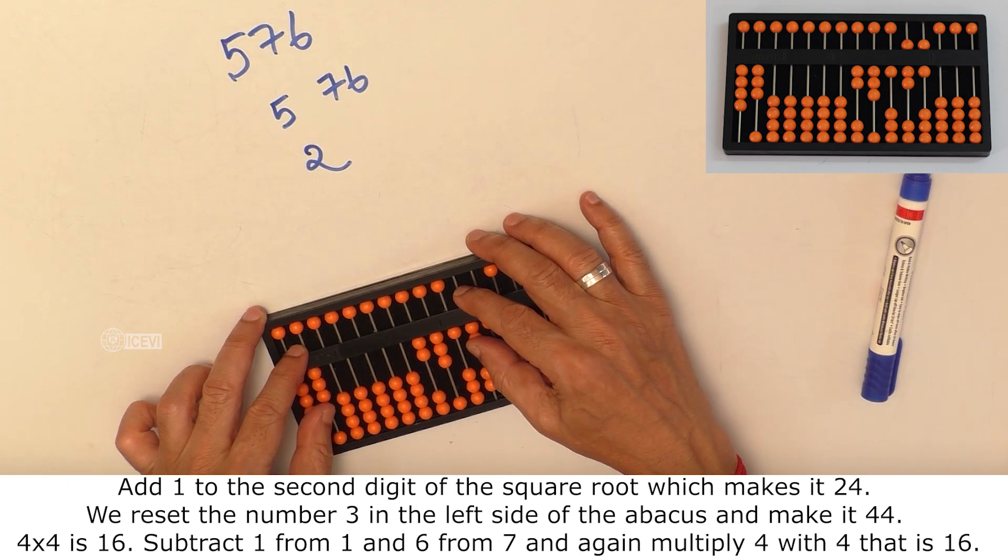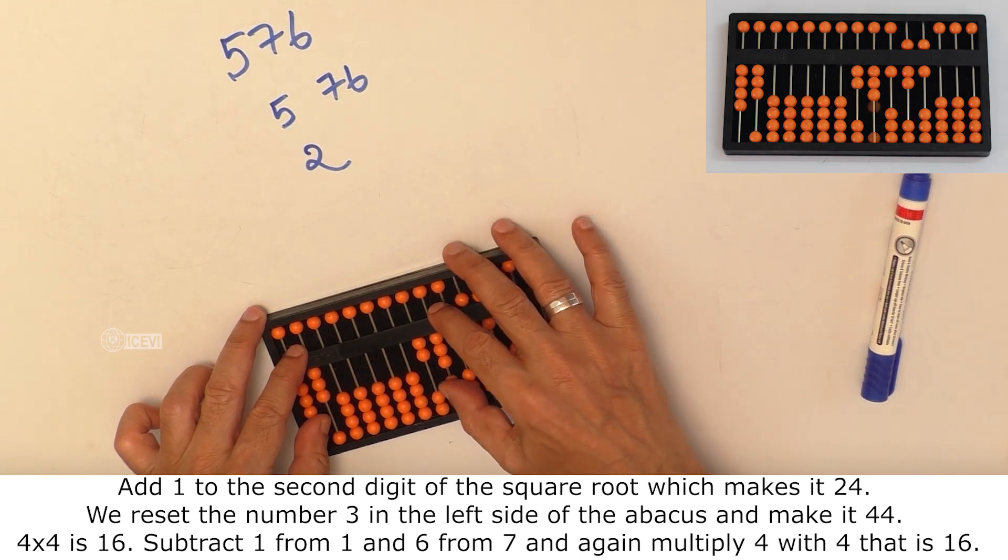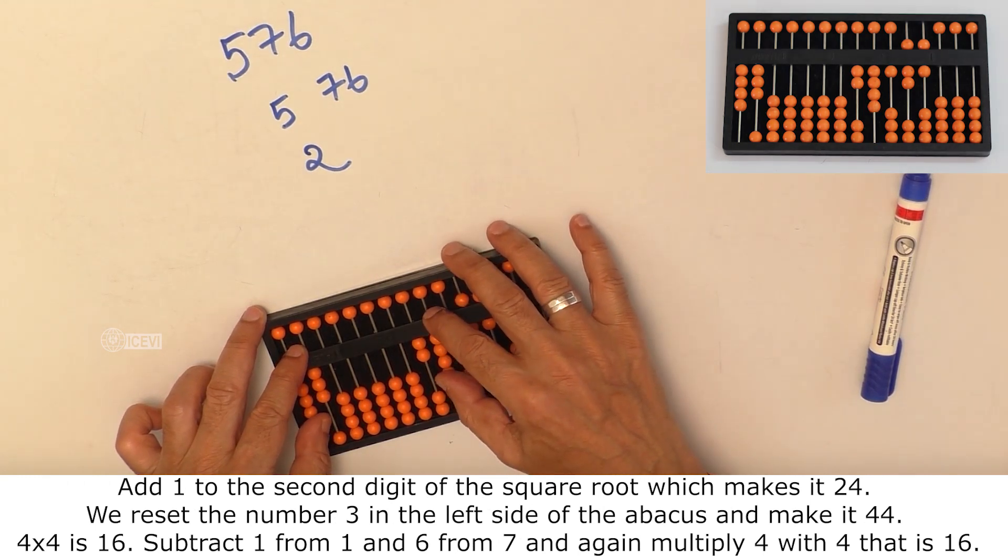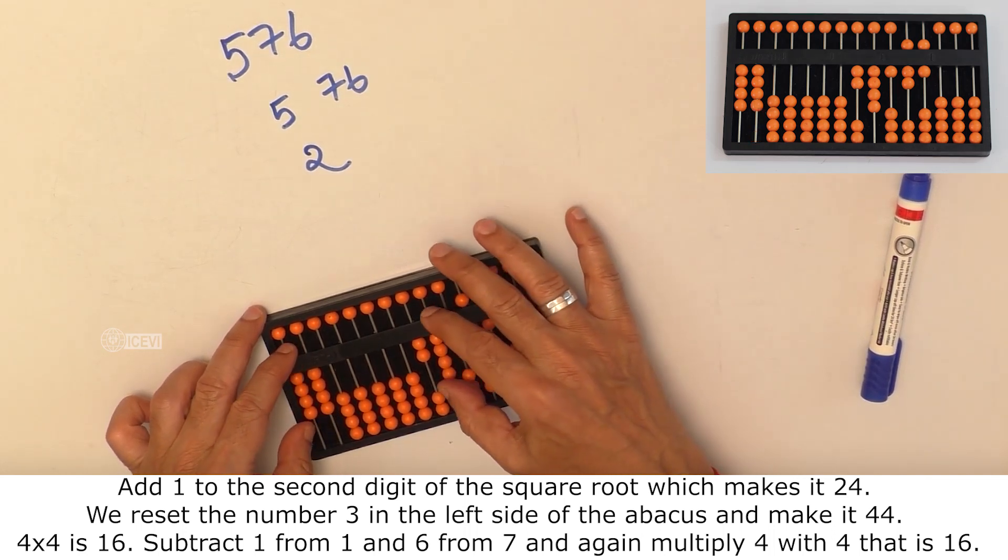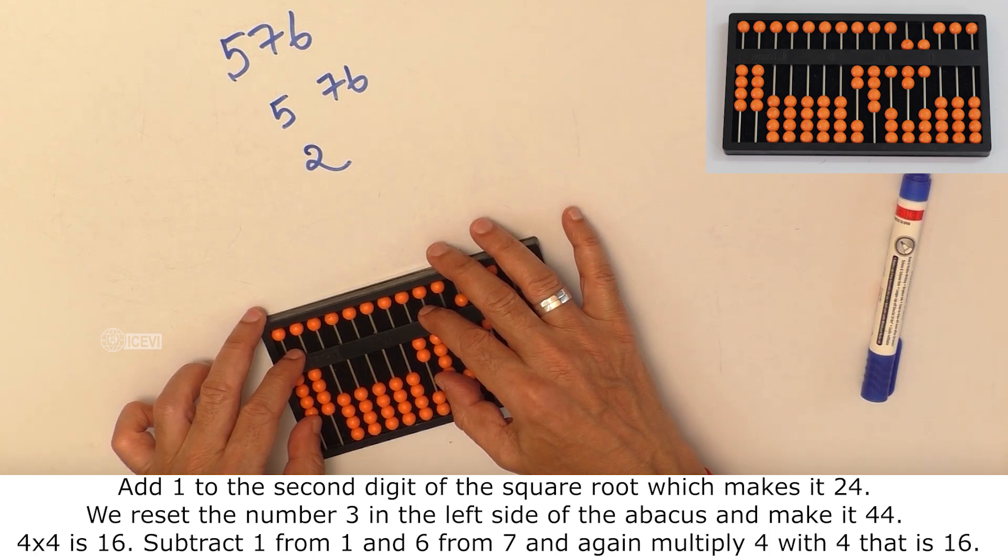Now add 1 to the square root making it 24. We reset the number 3 in the left side of the Abacus and make it 44. Now, 4 should be multiplied with 44.